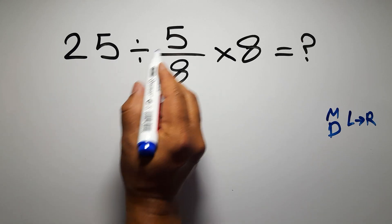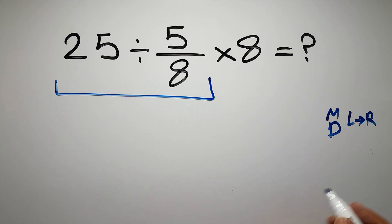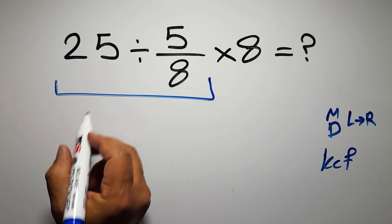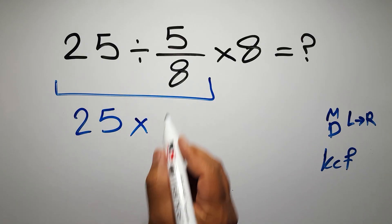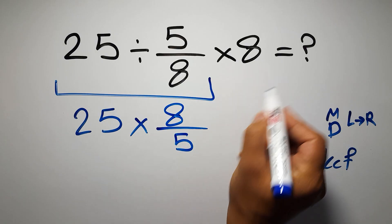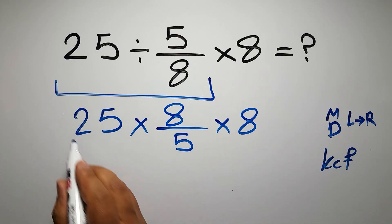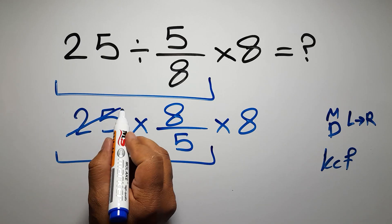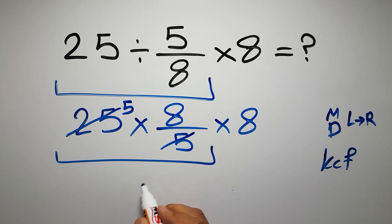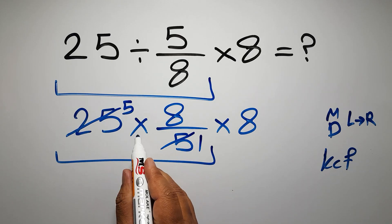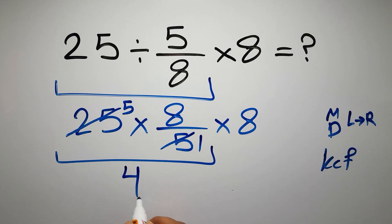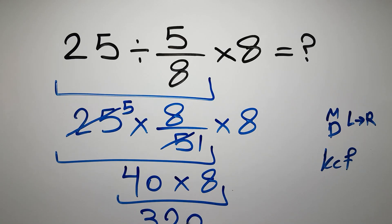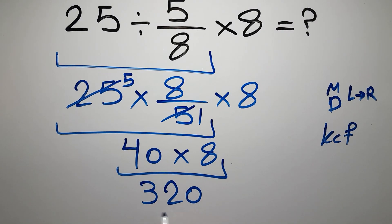So first, 25 divided by 5 over 8. According to the KCF rule — K stands for Keep, C stands for Change, and F stands for Flip — we keep the first fraction, change division to multiplication, and flip the second fraction, then times 8. So 25 times 8 over 5 times 8: 25 divided by 5 gives us 5, and 5 divided by 5 is just 1. So we have 5 times 8 which equals 40, and 40 times 8 equals 320. This is our final answer: 320.